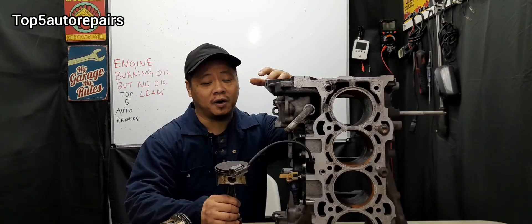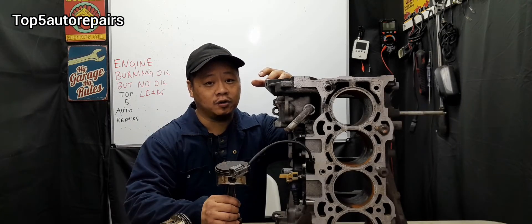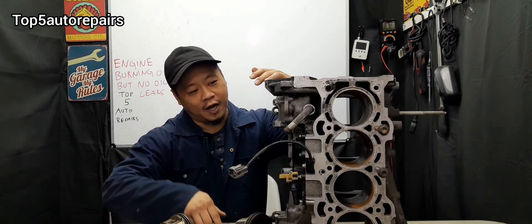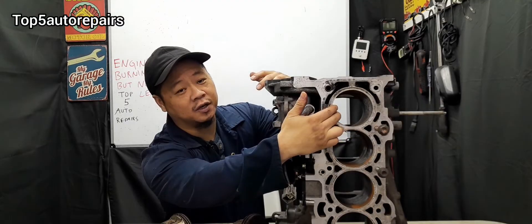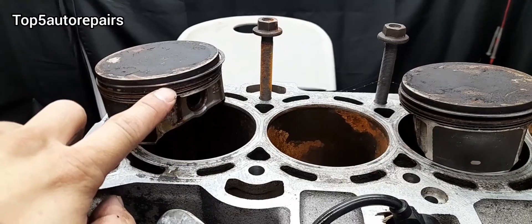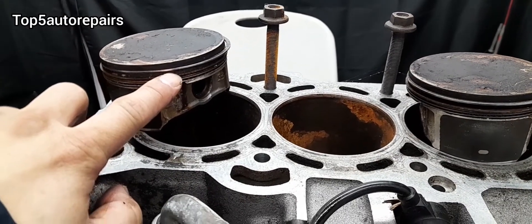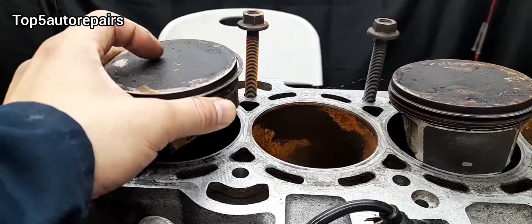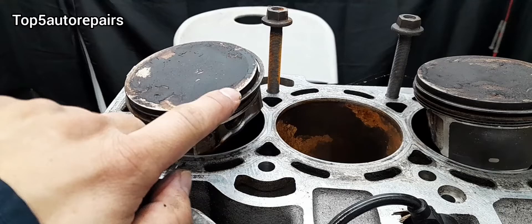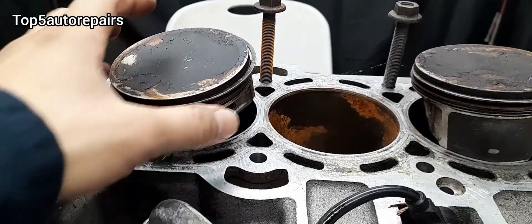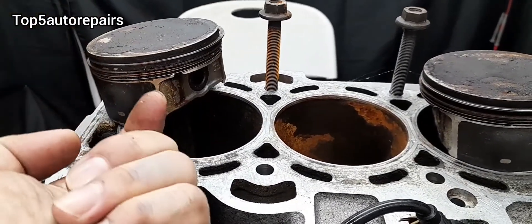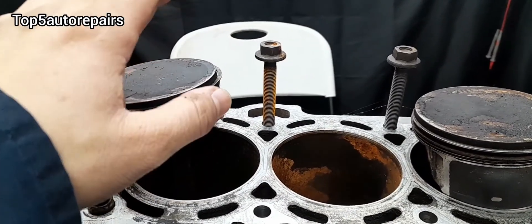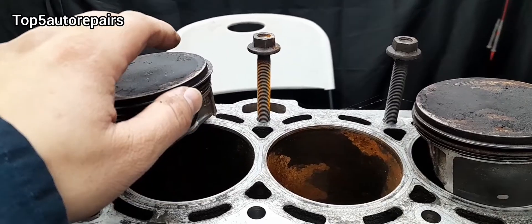The next common reason why your engine is burning engine oil is because you either have bad piston rings or worn cylinder walls. When the compression rings and oil rings become worn, and also when the cylinder walls become worn, there's going to be more clearance between the piston and cylinder wall. So the oil from the bottom end is going to seep past through the rings, go straight to the combustion chamber, and you're going to lose more engine oil.